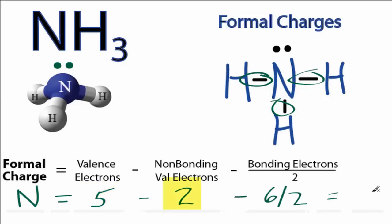And 5 minus 2 minus 3 gives us 0. So the formal charge on that central nitrogen there is 0. And we can show that by putting parentheses and a 0 next to the nitrogen.